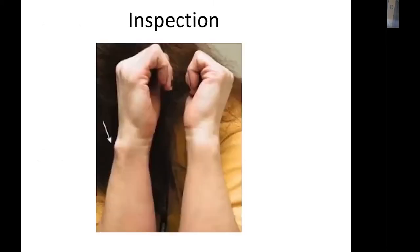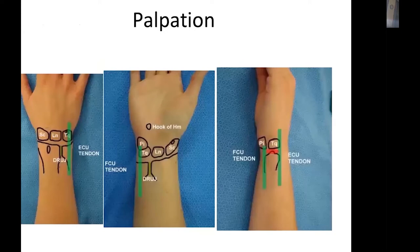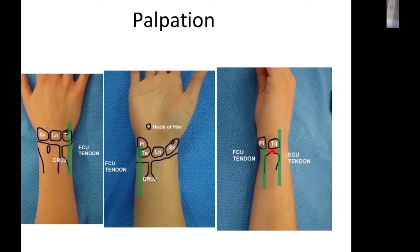When a patient presents with ulnar-side rest pain, perform a formal examination including inspection and compare both sides to detect any abnormality. Palpate and test each side of the joint, starting from the Lister tubercle, moving distally to the scaphoid proximal pole, then ulnarly into the lunate, lunotriquetral interval, triquetrum, ECU tendon, the DRUJ, and volarly the FCU. Between the ECU and FCU is the fovea, the site of TFCC attachment.